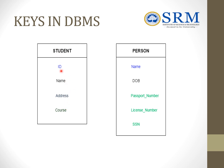Coming to the person database, I have name, date of birth, passport number, license, and SSN number. Passport number, license number, and SSN number are unique keys, even when compared with name and date of birth.